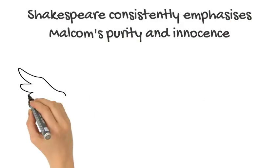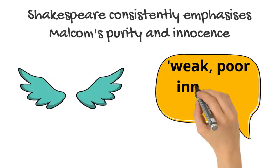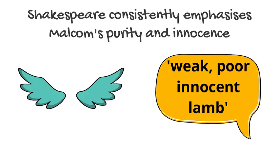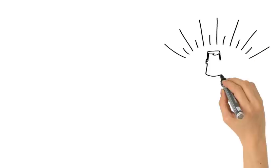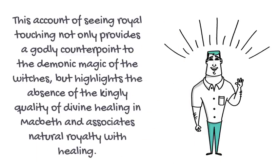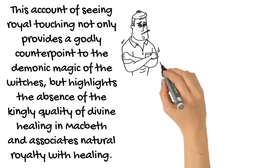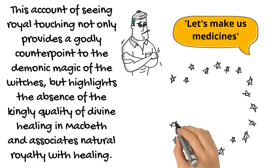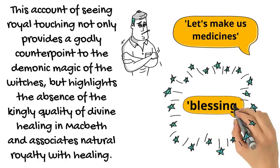Secondly, Shakespeare consistently emphasises Malcolm's purity and innocence. By using the symbol of the lamb to represent himself, Shakespeare has Malcolm contrast the black, hellish nature of Macbeth. It can also be seen as an allusion to Jesus, framing Malcolm as a sacrificial saviour. This pure nature is further emphasised by Malcolm mentioning Edward the Confessor's royal touch. This account of royal touching not only provides a godly counterpoint to the demonic magic of the witches, but highlights the absence of this kingly quality of divine healing in Macbeth and associates natural royalty with healing. This association is then seen in Malcolm in his use of the metaphor 'let's make his medicines' and the description of him as a blessing.